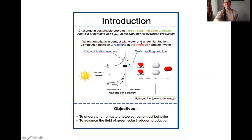When our hematite is in contact with water and under illumination, there is a competition between two reactions at the interface hematite-water. First, the water-splitting reaction that produces our hydrogen, and the recombination reaction that represents losses of energy. The objective of the project is to have a better understanding of the photoelectrochemical behavior of hematite.